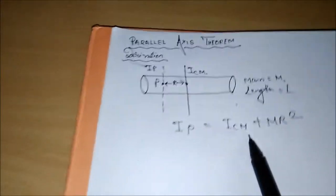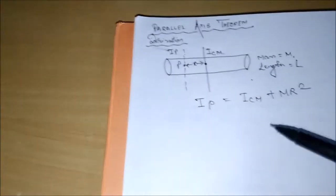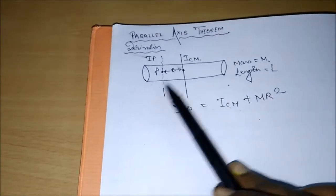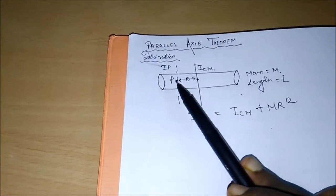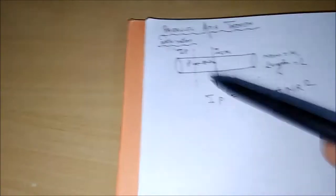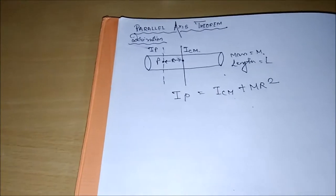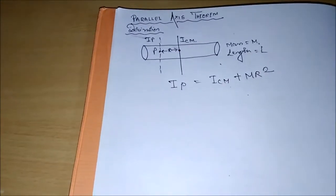Now what is MR²? M is the mass of the entire bar, no doubt. R is the distance, the perpendicular distance, between the distance from the center of mass to the point at which you want to find the moment of inertia. That's all right, this is the theorem, but how do we derive that?